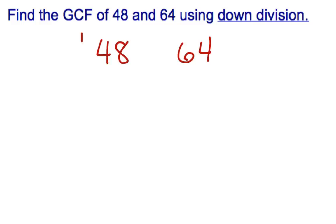It allows us to recognize what number goes into both at the same time. We had done down division to find prime factorization where we said what prime number can divide into it, but now you can think of what number can divide into both 48 and into 64.